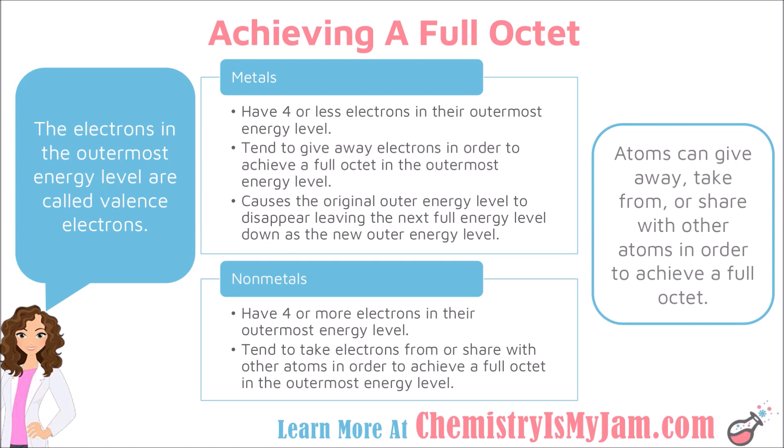Nonmetals have 4 or more electrons in their outermost energy level. They tend to take electrons from another atom — gaining electrons in order to achieve a full outer energy level. Anytime an atom gains electrons, it is gaining something negative and will have a negative charge when it becomes an ion. So on the periodic table, metals tend to take a positive charge and nonmetals tend to take a negative charge.